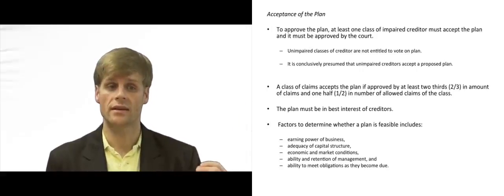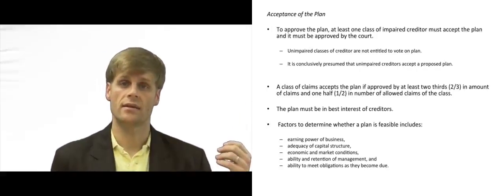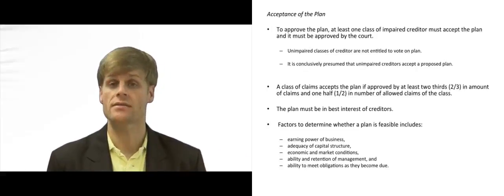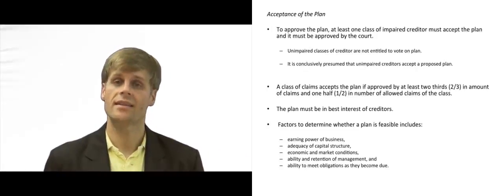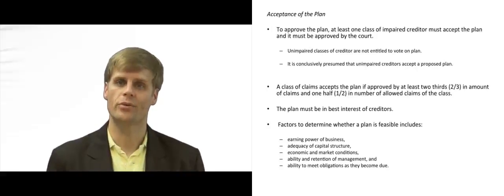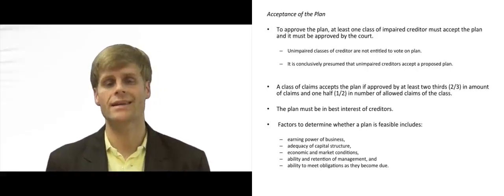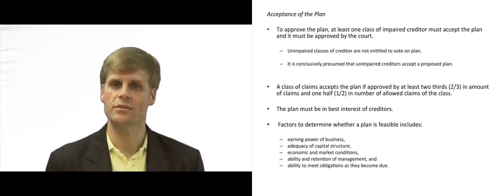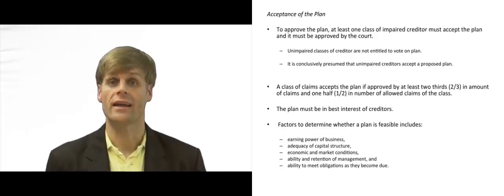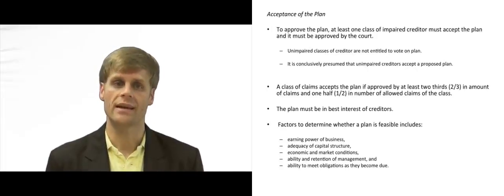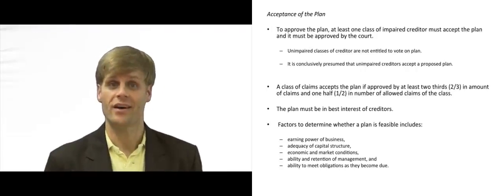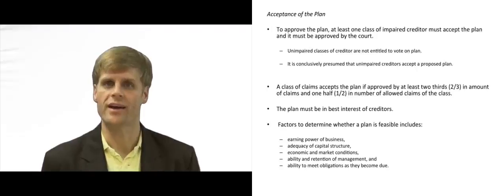If all elements are present — the voting requirements, the priority interests, and the best interest aspects — then the court can approve the plan. However, it retains a lot of authority and autonomy in reviewing the different elements to determine whether the plan is truly feasible. If it is, the court will approve the plan and the debtor proceeds with carrying out the plan over the stated period of time.